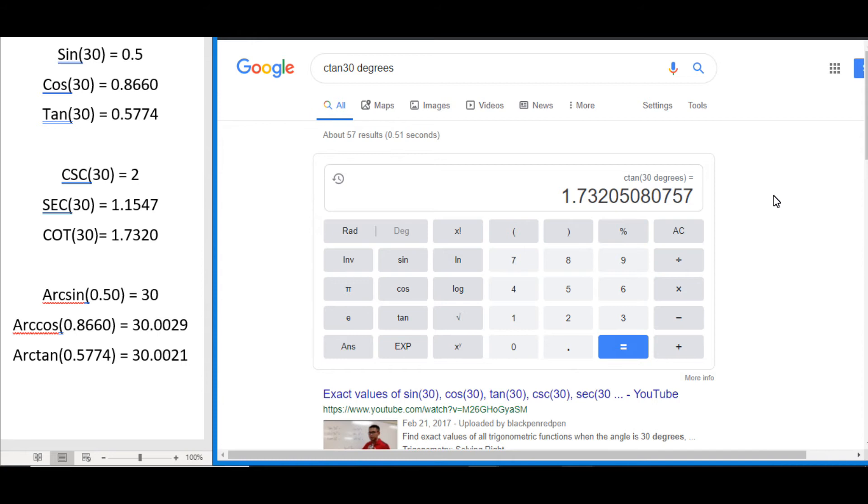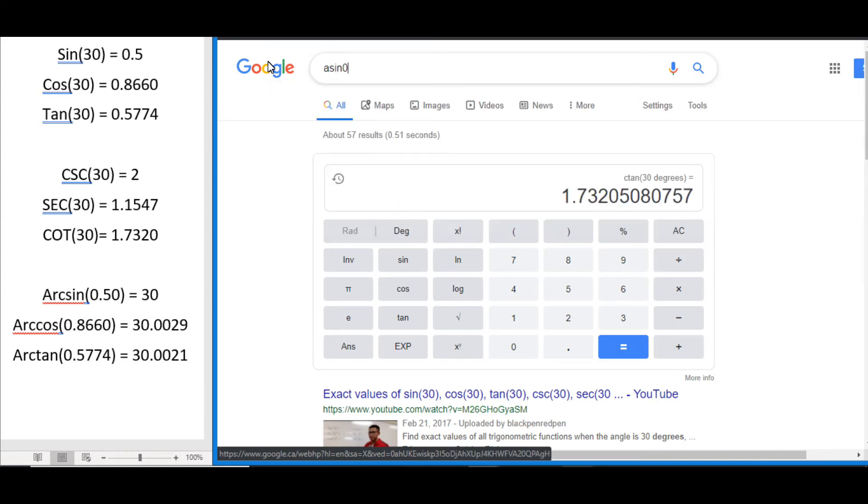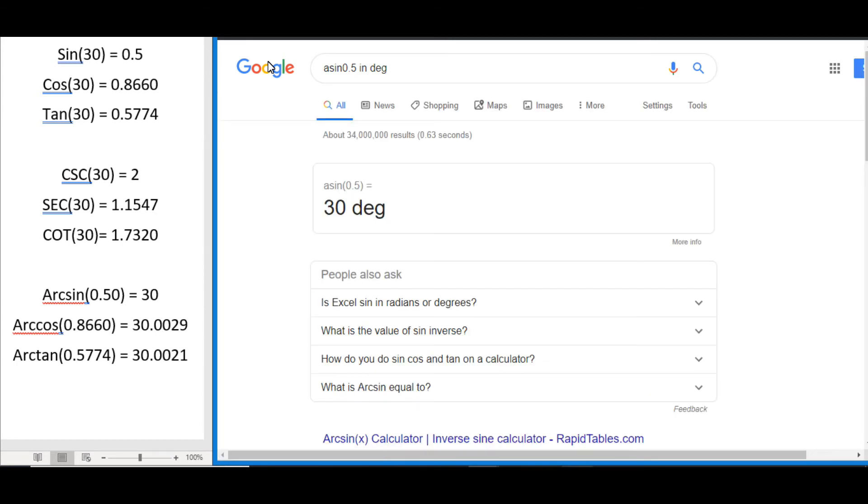All right, and we can use the search bar to solve this as well. So if we wanted to do again the arc sine of 0.5, we would just type in asin 0.5, and remember this assumes radians, so we want to type in in DEG to tell it we want degrees, press enter and you can see it returns to 30 degrees.